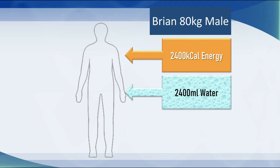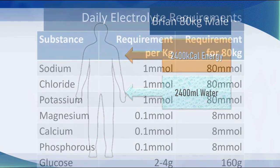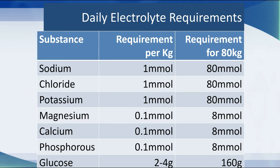Ideally, if you could make a food for him that contained one calorie per mil and gave that over 24 hours at 100 mils per hour, that would cover his liquid and nutritional requirements — and this is done with nasogastric feeds. Looking at his daily electrolyte requirements, you need about 1 millimole per kilogram of sodium and 1 millimole per kilogram of chloride, 1 millimole per kilogram of potassium, and 0.1 millimole per kilogram of magnesium, calcium, and phosphorus, plus about 2 to 4 grams of glucose in total.